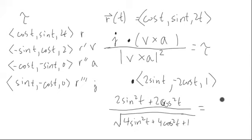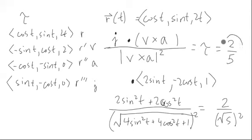So it looks like we end up getting two over the square root of, oh but then we have to square it. Remember, squaring it. Square root of five squared. Always square that length after you compute it. So we end up just getting a torsion value of two fifths. And notice that this is a constant torsion for this helix. It doesn't change dependent upon T, but it's the same for every value of T.